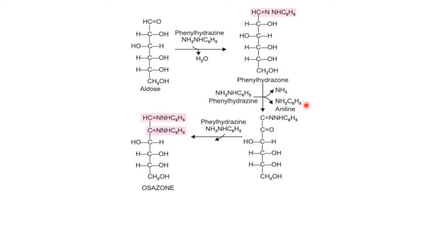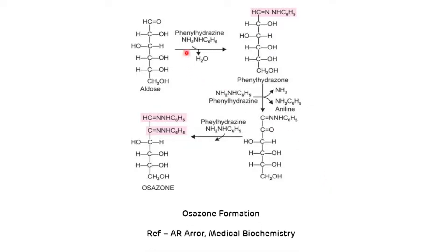If glucose is present in the solution, it leads to the formation of glucose osazone. If maltose, lactose, or fructose are present, they lead to the formation of maltose osazone, lactose osazone, and fructose osazone respectively. In the whole reaction, three molecules of phenylhydrazine are utilized.